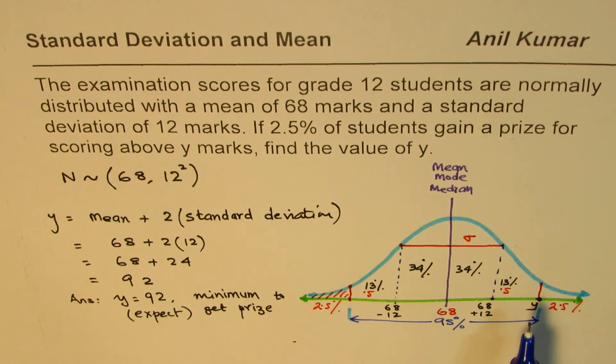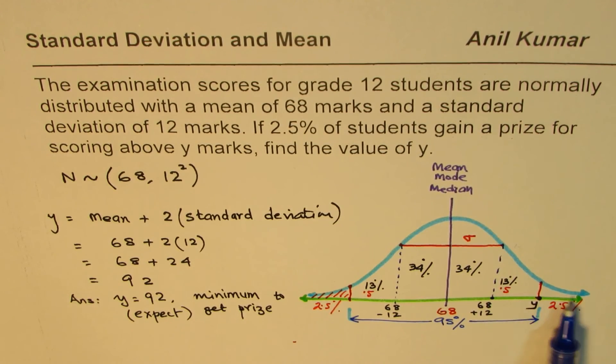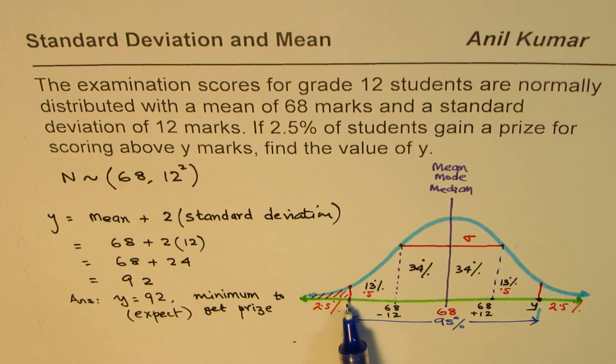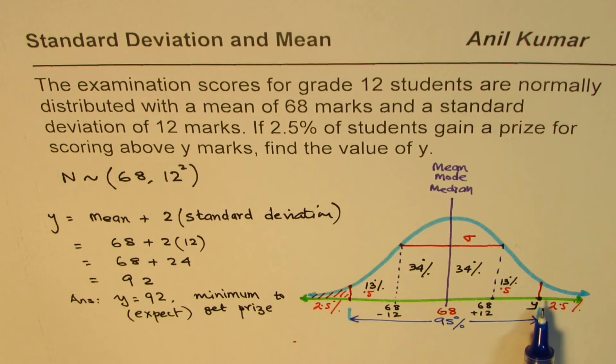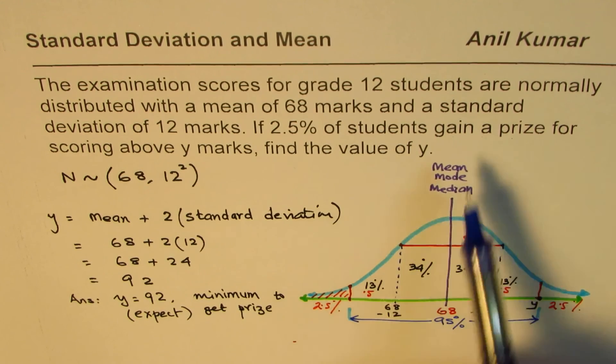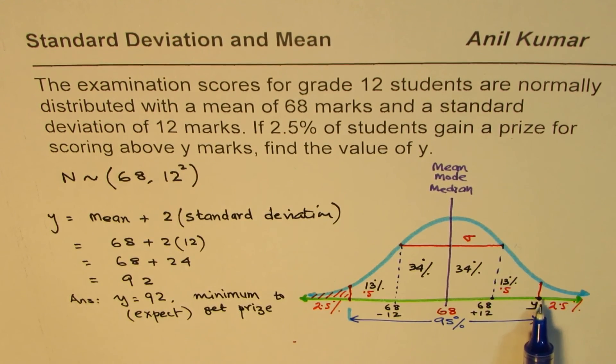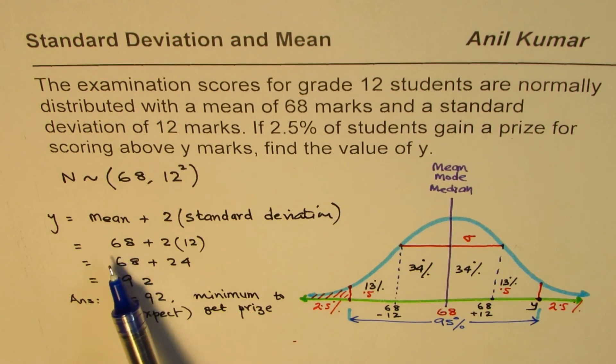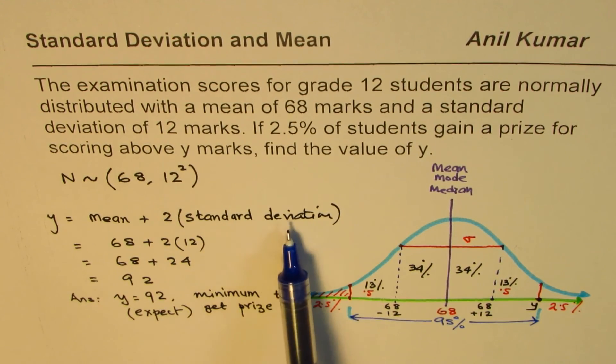Two standard deviations away will take care of 95% of these students. If you are trying to figure out what is the value for the extreme on the right side, that will be 2.5%, and extreme on the left side will also be 2.5%. To find the minimum marks to get the prize will be at the edge of 95%, so we expect that to be mean plus two standard deviations away.